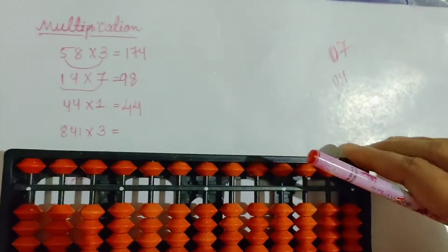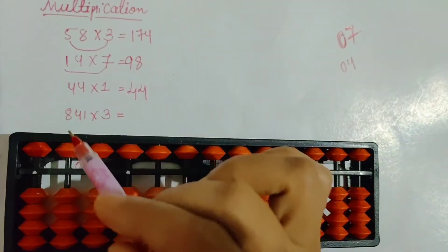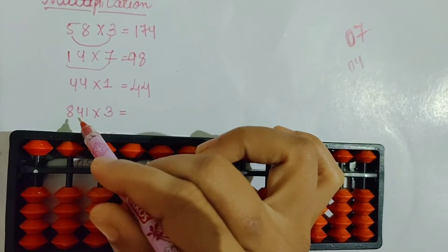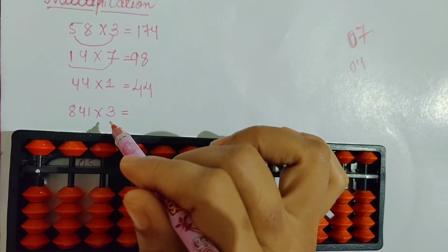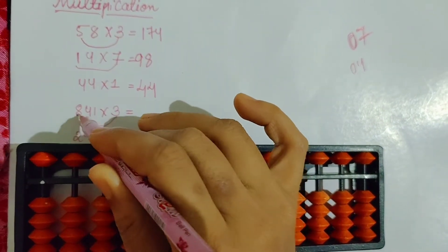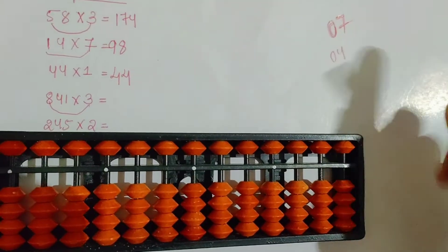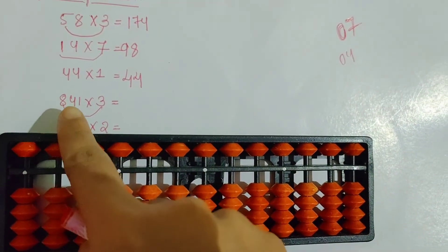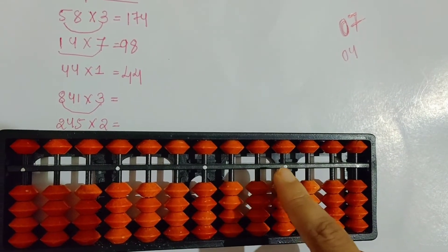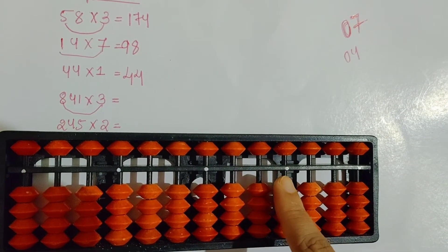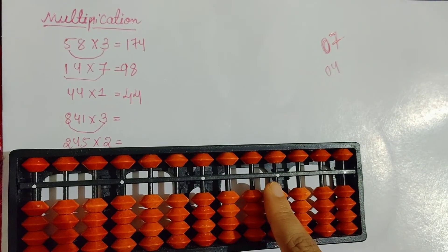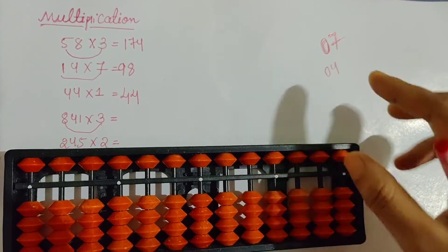See the next question. So here triple digit with single digit is there. So first you will multiply 3 with 8. First, 3 8s are 24. So here 1, 2, 3, 4 — 4 digit question is there, means you will start the answer from the fourth row. 4 digit question is there so you will start the answer from the fourth row. First, 3 8s are 24.